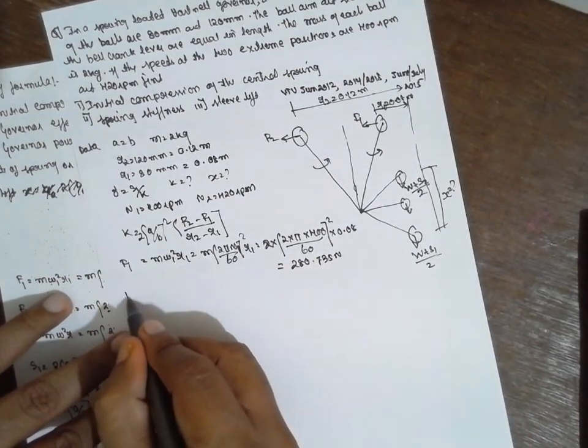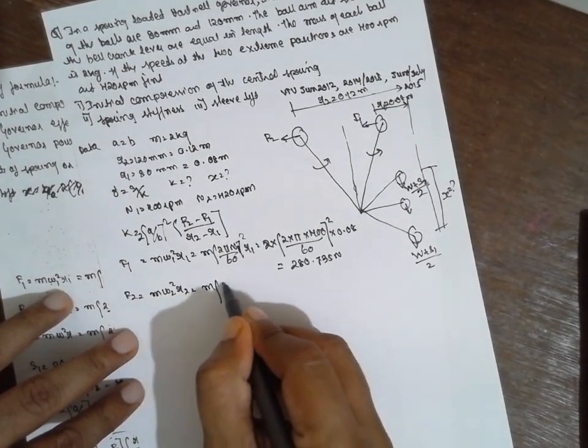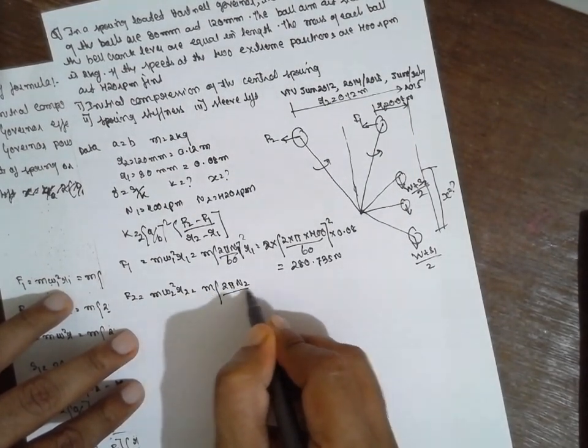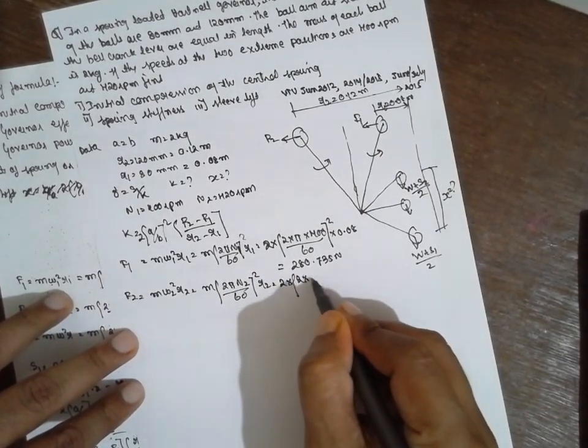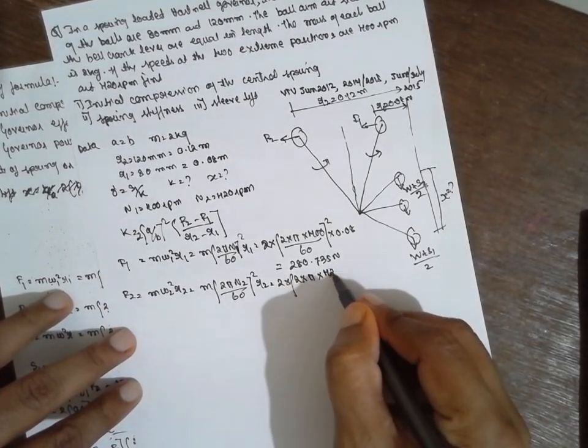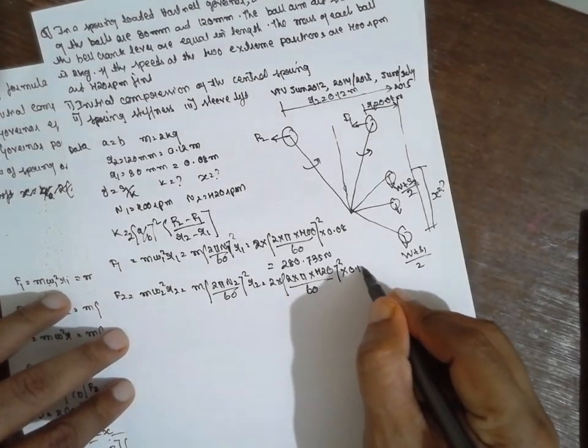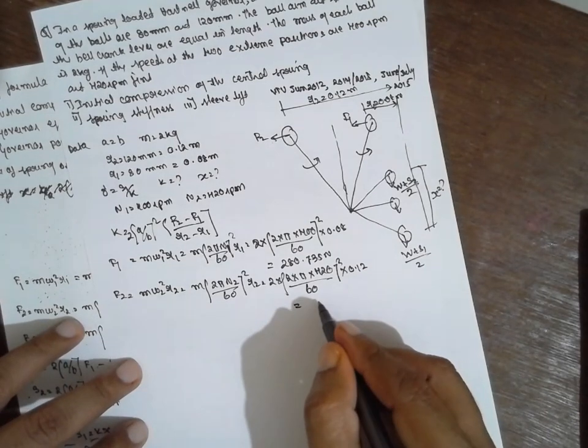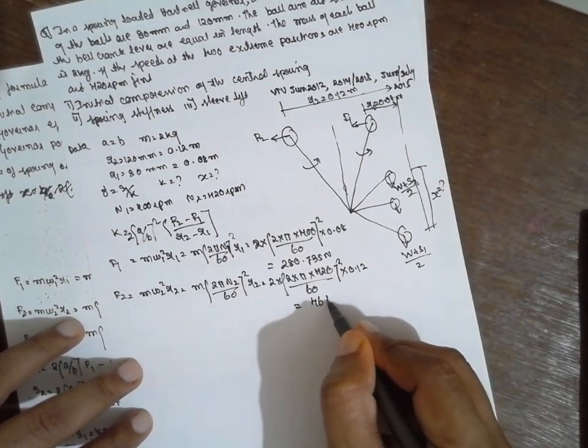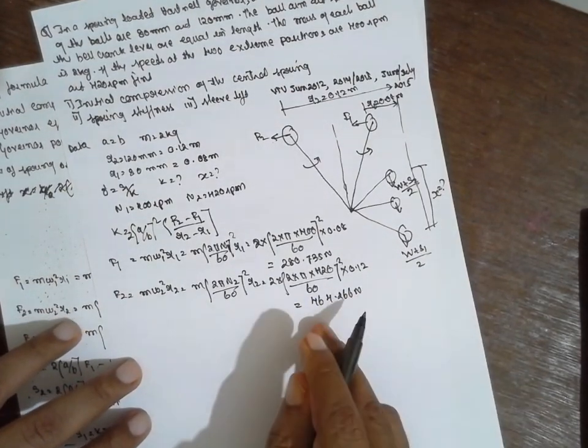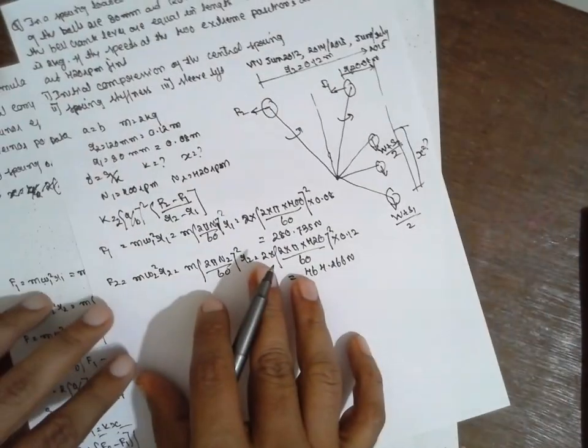Now F2. F2 is equal to M omega 2 square R2. M 2 pi N2 divided by 60 whole square R2. 2 into pi into 420 divided by 60 whole square into 0.12. The answer will be 461.266 N. We got F1 and F2.